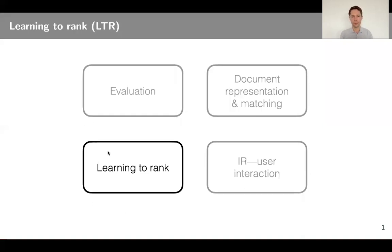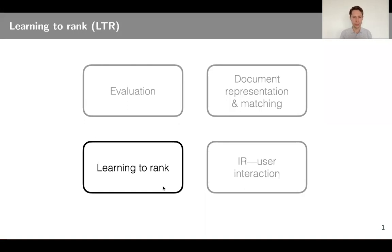We are talking about the third pillar of IR — learning to rank. We now know how to evaluate, what kind of metrics we optimize, which will be important today. We know how to represent documents and queries and how to match them, and we did that in a mostly unsupervised way. Today we will talk about learning to rank — mostly supervised ways to match documents and queries.